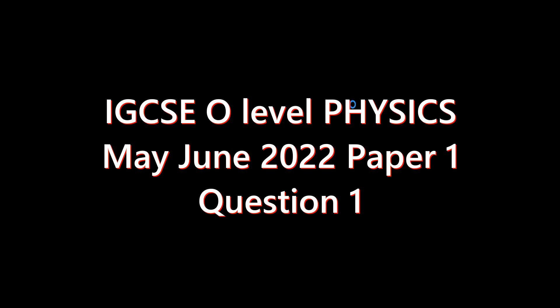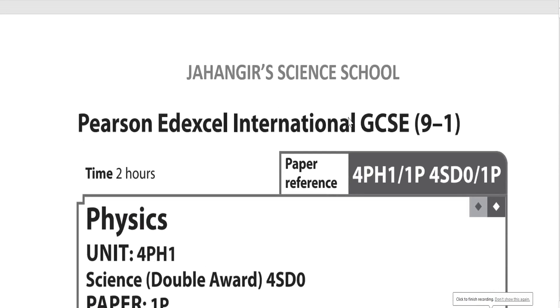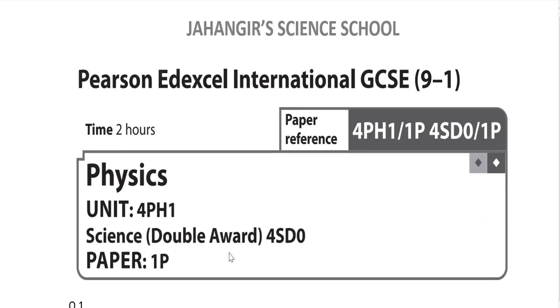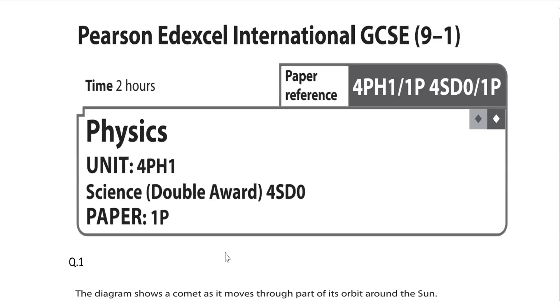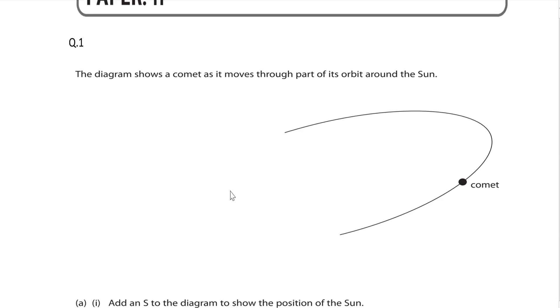Assalamu alaikum, welcome to Jahangir Science School. Today I am going to solve Pearson Edexcel International GCSE 9-1 Physics Paper 1, May/June 2022, question number one. The diagram shows a comet as it moves through a part of its orbit around the Sun.